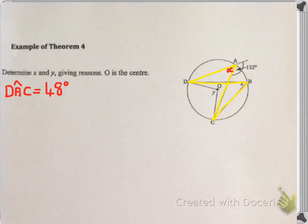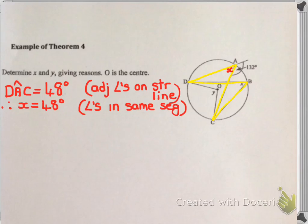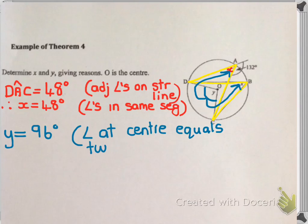Now, finding angle A is easy. Angle DAC is 48 degrees—I got that from taking 180 and subtracting my 132 degrees because they are adjacent angles on a straight line. That means x must be 48, because x and angle A are angles in the same segment. In order to find y, y is related to either of these x's, because y is the angle at the centre and DC subtends x at the circumference. So I know that y will be double x, which is 48 degrees, giving 96. The reason from Theorem 2: angle at centre equals twice angle at circumference.